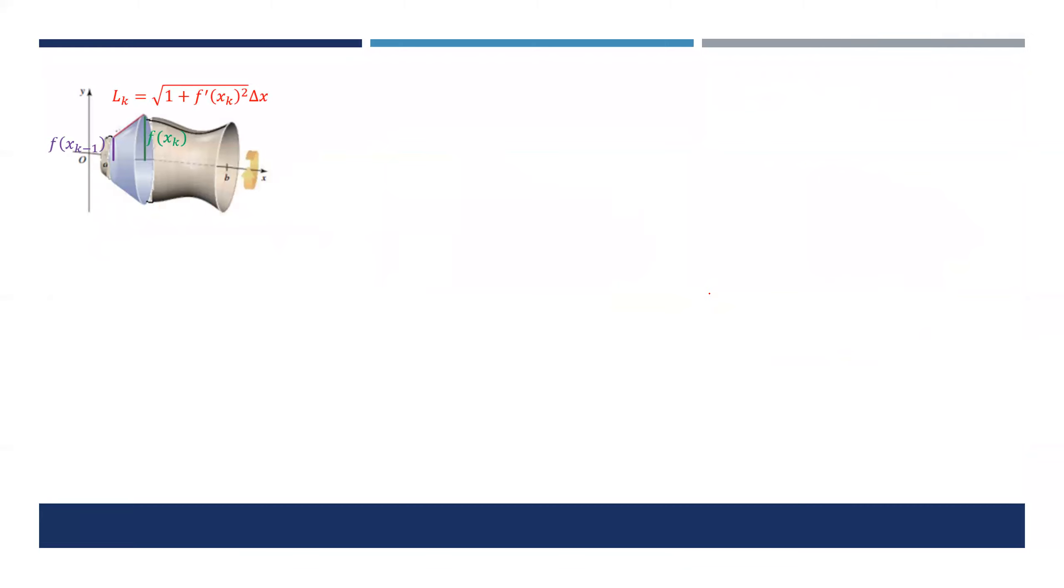Let's define some words here. The red part is the length. That should have been delta y sub k over delta x squared. We know that when we take the limit we have the derivative squared. Suppose this is f sub k and this is f sub k minus one, meaning the previous function value.